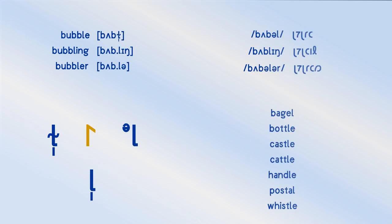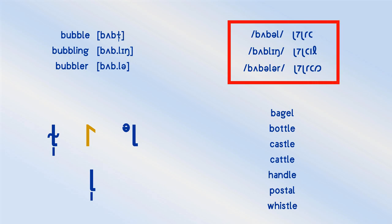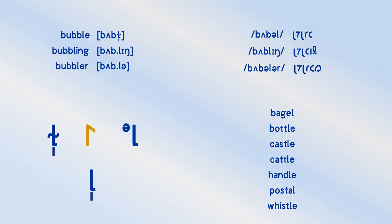Syllabic L is not too difficult to spot in Latin script because it is frequently written as LE. However, that's not always the case, as you can see in bagel and postal. But it is in bottle, castle, cattle, handle, and whistle, as well as our example word of bubble. It is typically a dark L, but when a suffix is added it can frequently change into a clear L — bubbling, bubbler. In the Shavian spelling in the top right, they add a schwa in bubble, it disappears in bubbling, but then it's back again in bubbler, which they also write rhotically. Some voices argue that having characters appear and disappear like this can be confusing for people learning to read. Nonetheless, as that happens in speech in some words anyway, they generally tolerate it to some extent.